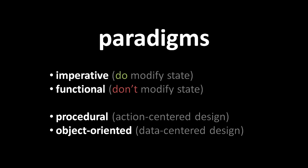Given our two pairs of paradigms, we have four possible combinations: imperative procedural programming, imperative object-oriented programming, functional procedural programming, and functional object-oriented programming. While imperative programming is much more popular than functional programming, procedural programming and object-oriented programming are perhaps about evenly popular. Imperative object-oriented code is most common today, but imperative procedural code follows close behind.